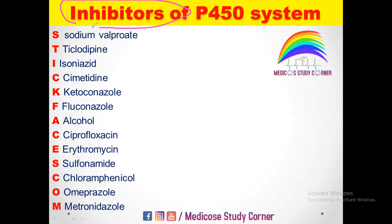When a drug is an inhibitor of the P450 system, it means the P450 system is inhibited, and the metabolism of drugs that are metabolized by the P450 system is also inhibited. When their metabolism is inhibited, the effect of the drug on the body will be increased.